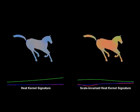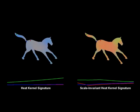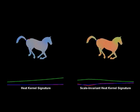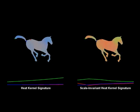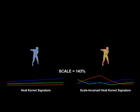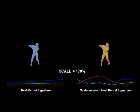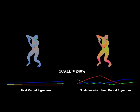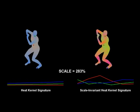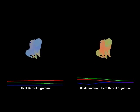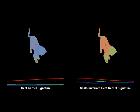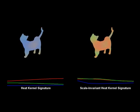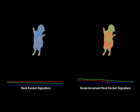Like the heat kernel signature, the R method is invariant to isometric deformations of the shape. A major advantage of the R method over the heat kernel signature is invariance to scaling. Because of the scale invariance property, the R method is also less sensitive to local scaling.